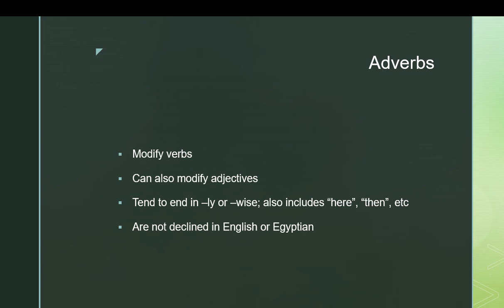Adverbs are a tricky category of words. In general, adverbs modify verbs, but they can also modify adjectives or other adverbs or basically any part of speech — they're very versatile. In English, many adverbs end in an ending like '-ly' or '-wise.' These adverbs tend to be the ones that originated from other words — for example, 'quick' is an adjective, 'quickly' is the adverb version of that adjective. It also includes some very common words of time and place like 'here' and 'then' and their counterparts. In Egyptian and in English, adverbs are not declined in any way, which is pretty common across languages.